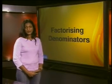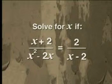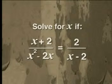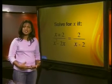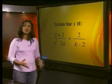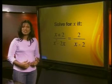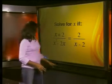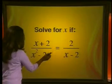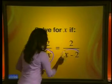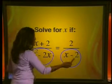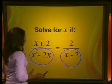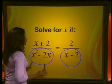Have a look at this example. Solve for x if (x + 2) divided by (x² - 2x) is equal to 2 divided by (x - 2). Now we already know the processes that we need to solve this equation. To make our equation simpler, we must find the lowest common denominator. If we take (x² - 2x)(x - 2) as our common denominator and multiply each term, our calculations become very complicated, but we'll eventually get to our answer.